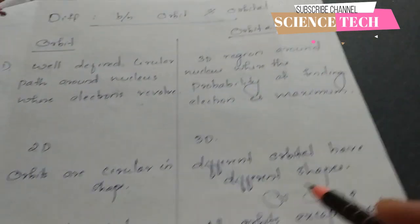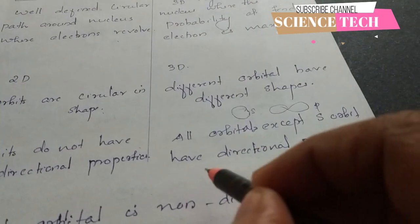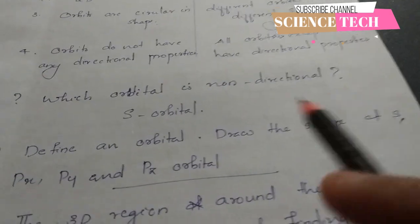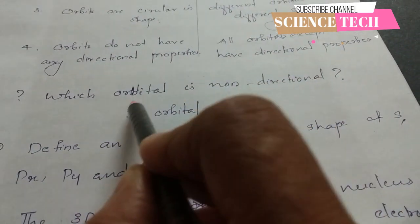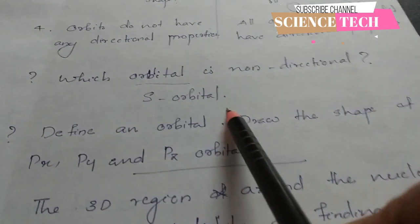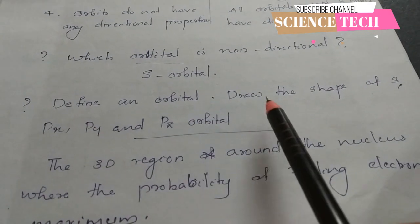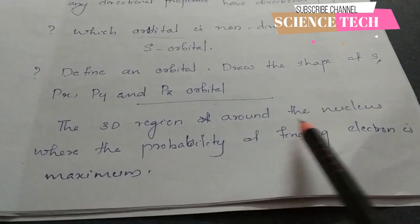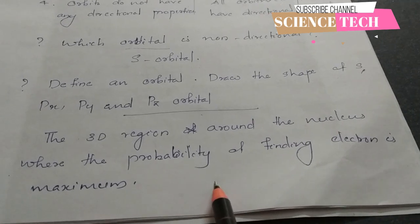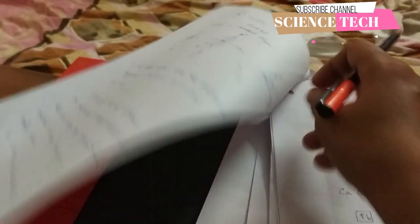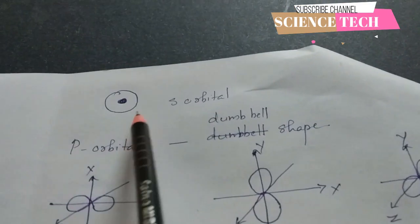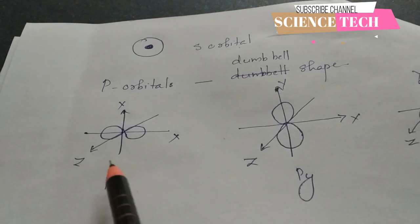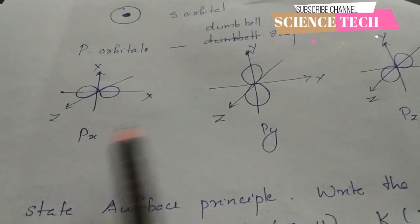All orbitals except the S orbital have directional properties. S orbital is non-directional and has a spherical shape. The P orbital has a dumbbell shape, with lobes oriented along the X, Y, and Z axes, giving us PX, PY, and PZ orbitals.